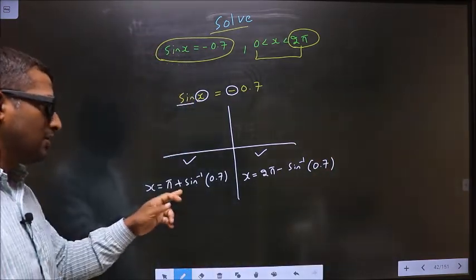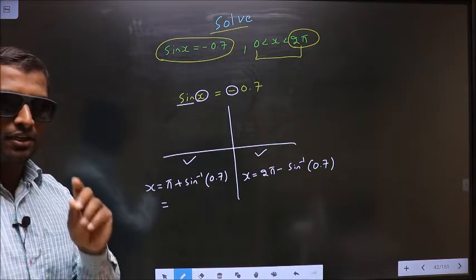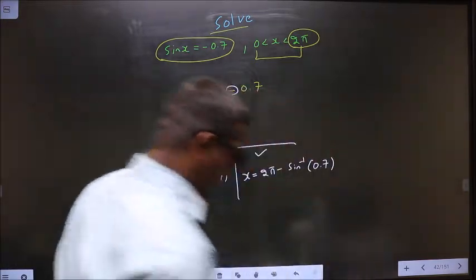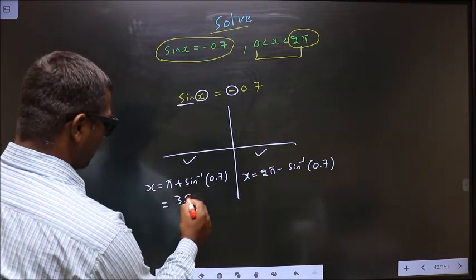Now put this in the calculator. Before calculating, I repeat your calculator should be in radians mode. Now put this in the calculator, you should get 3.92.